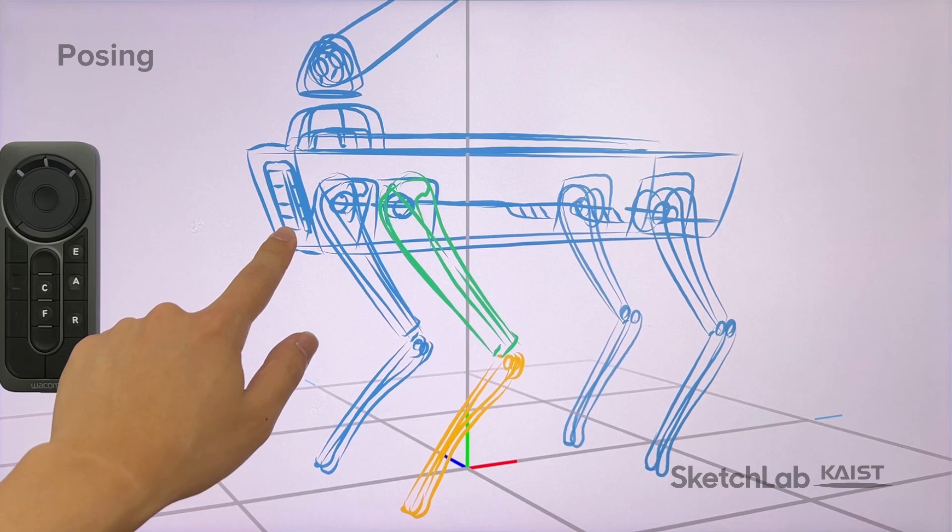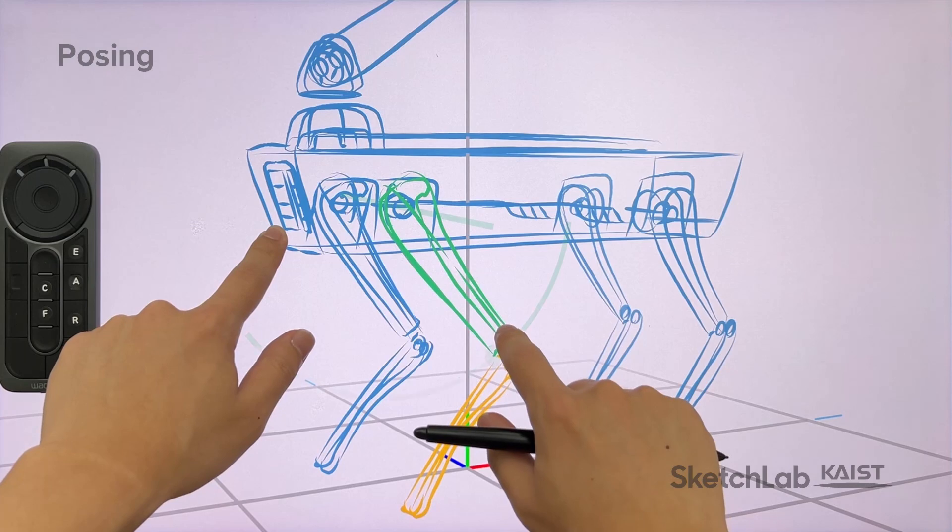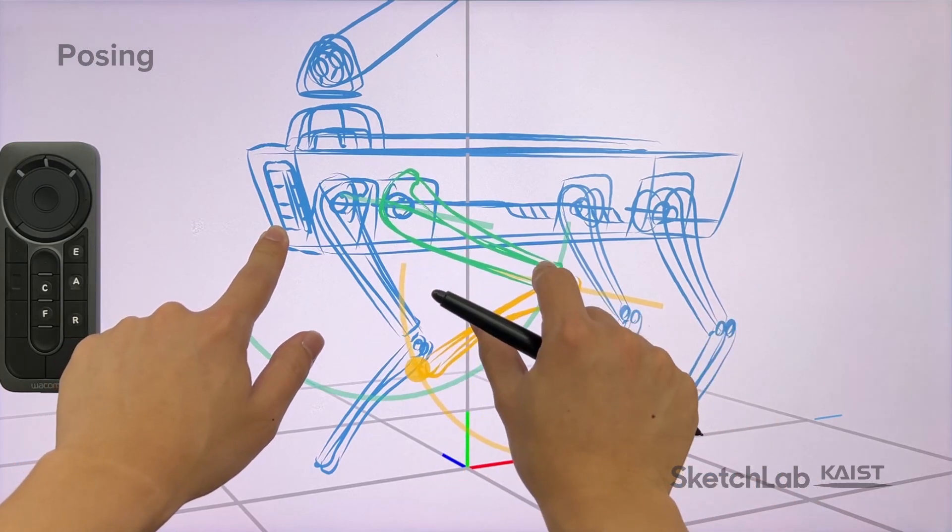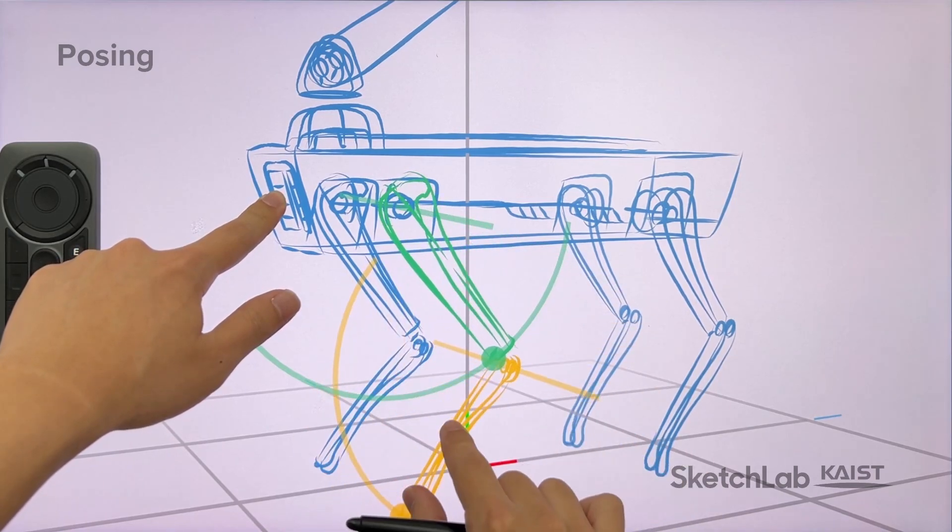While holding down a part to keep still, the designer can move one part by forward kinematics with one finger, move multiple parts by forward kinematics with one finger on each part, or move multiple parts by inverse kinematics with two fingers on the same part.